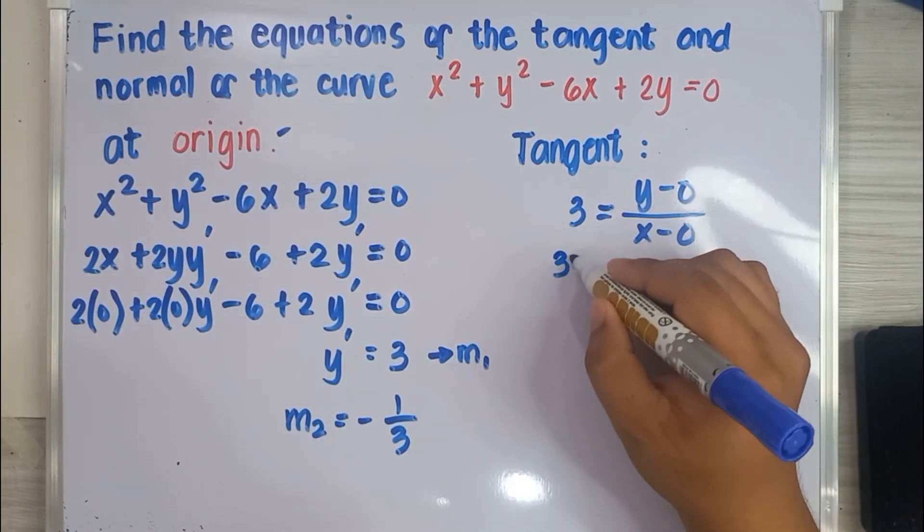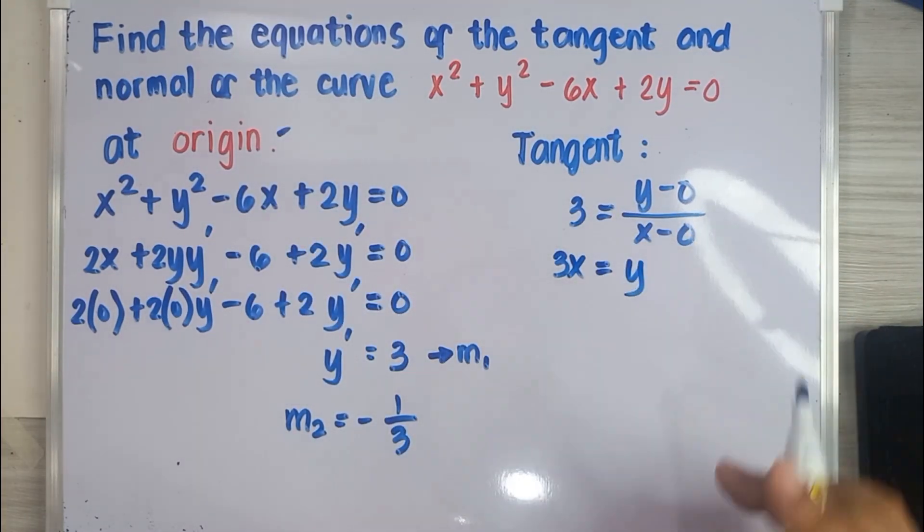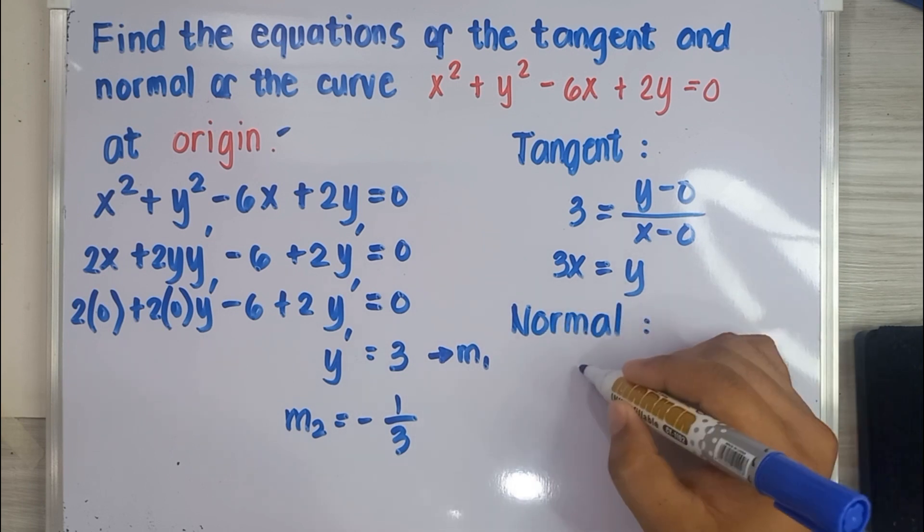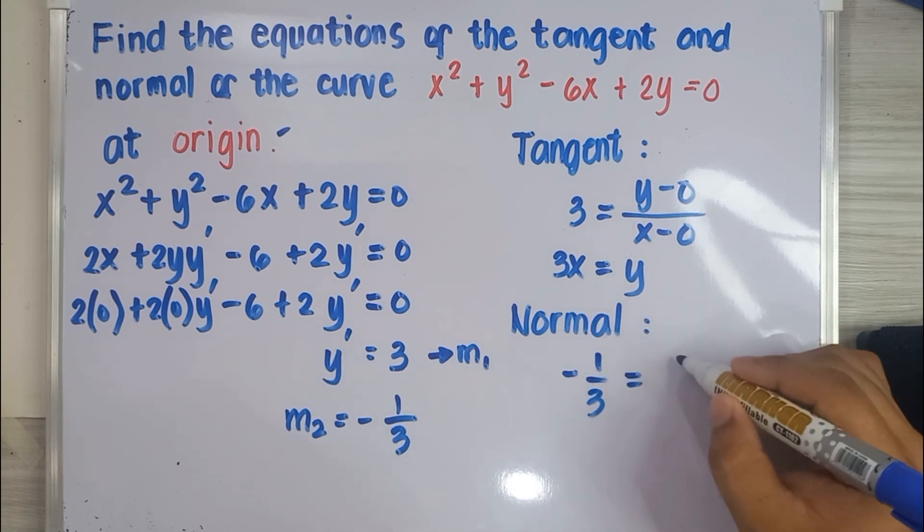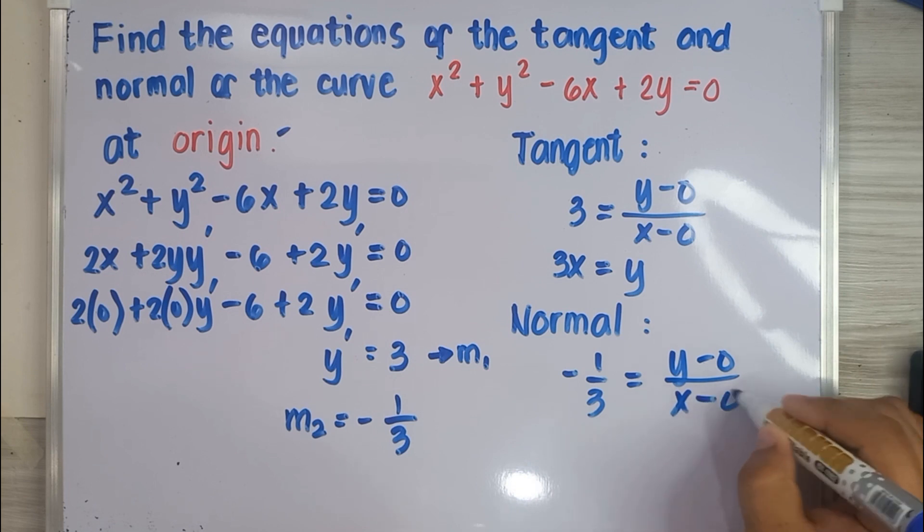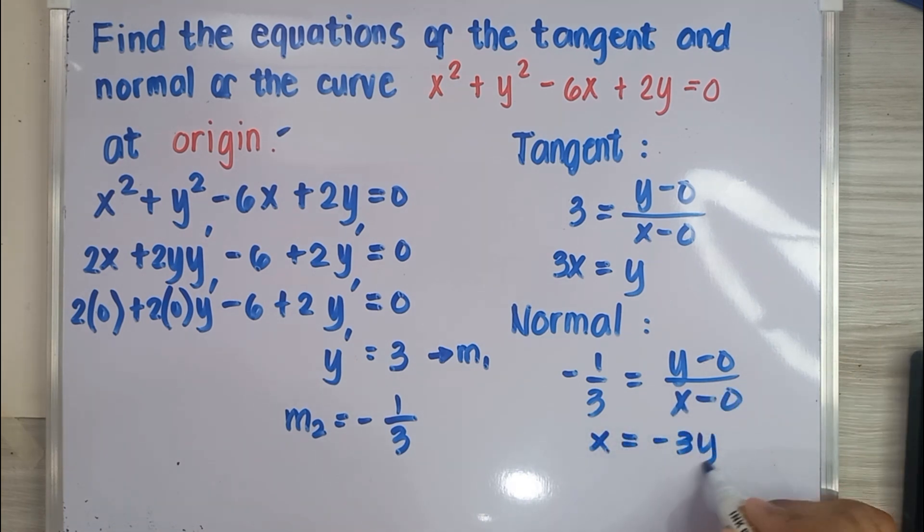Use the point-slope form. The equation of tangent is y equals 3x. The equation of normal is x equals negative 3y.